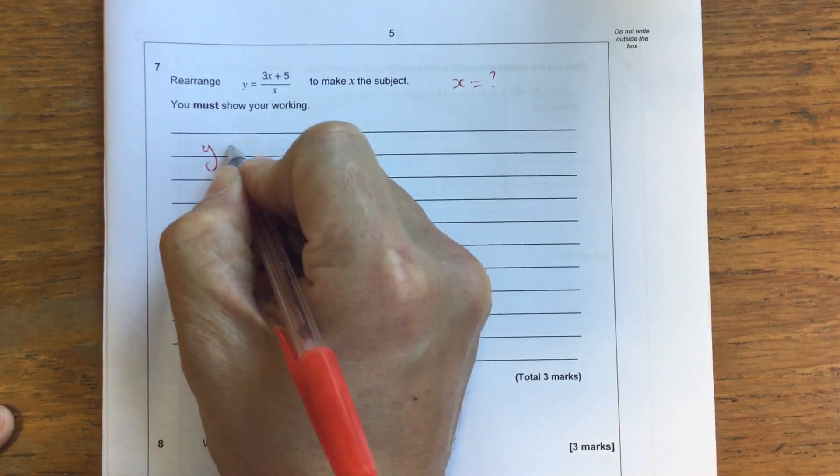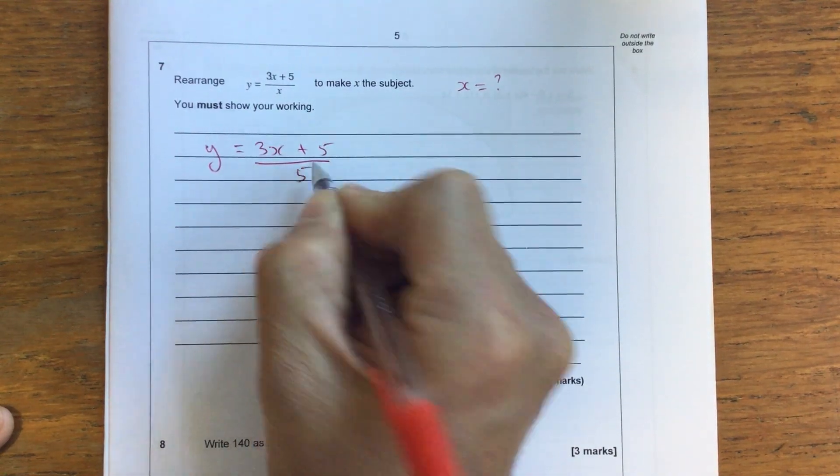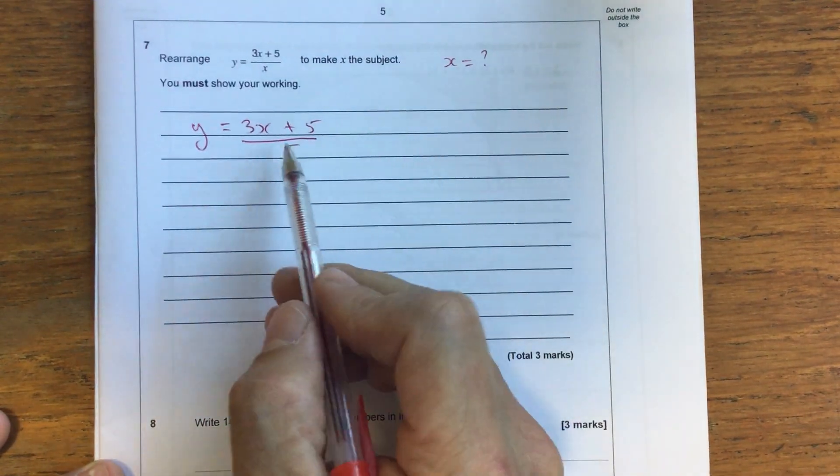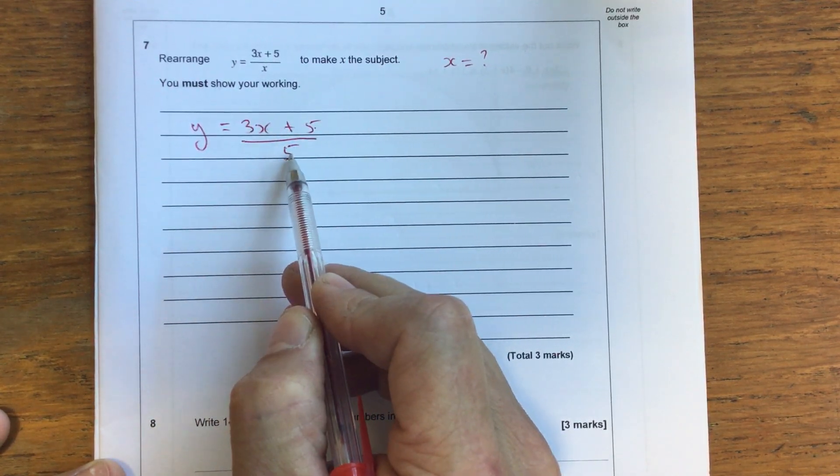So what I'd do here is I'd first of all just write out the expression before we start doing any manipulation. So what I'd suggest, if you think about this on the right hand side, you've got 3x plus 5 all divided by 5.